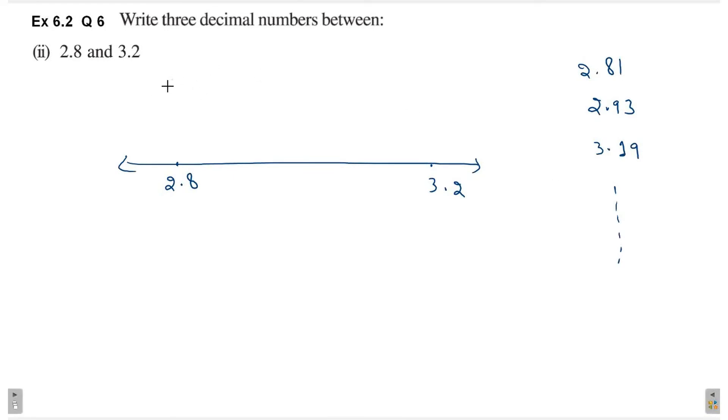So to answer this question, what is the simplest number we can write? 2.9, 3.0 and 3.1. Because in the answer you only have to write 3 decimal numbers.